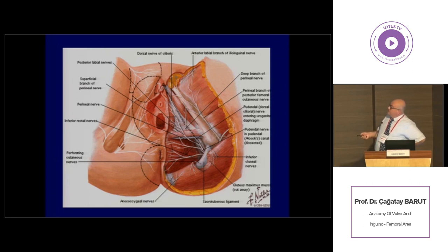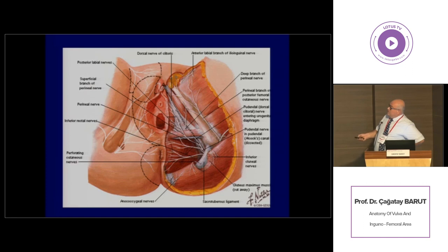Here we can see the deep branch, which mainly contains motor fibers, and a superficial branch which contains both motor and sensory nerve fibers. Here we can see the ischial tuberosity, which is a reference point to find the placement of the pudendal nerve. On the lateral aspect we can see the perineal branch of the posterior femoral cutaneous nerve, which also contributes to sensory innervation of this area.